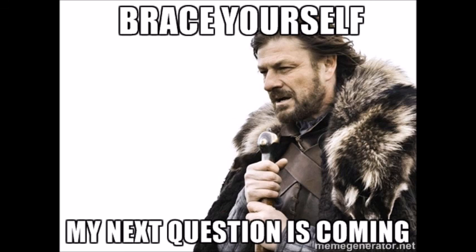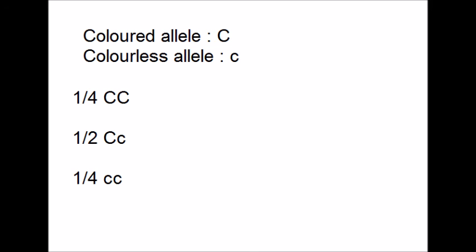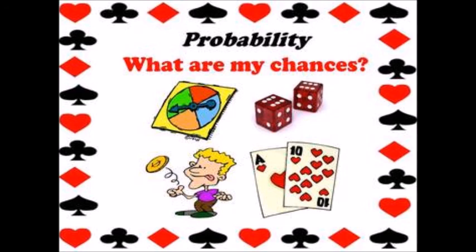In the next question we can work out that the colored allele is dominant to the colorless allele since there are 3 colored plants for every colorless plant. Since we are only selecting from the colored plants, we can ignore the colorless ones. Of the remaining plants, two thirds will be heterozygous and one third will be homozygous dominant. If we pick a homozygous dominant plant to self-fertilize, all offspring will be colored. However, if we pick a heterozygous plant, some offspring will be homozygous recessive and colorless. Since two thirds of the plants we are selecting from are heterozygous, the probability that we will pick a plant that produces colorless offspring is two thirds.